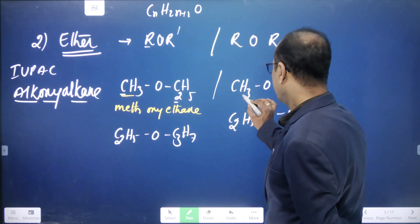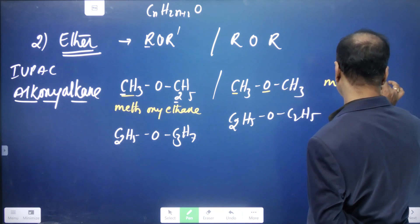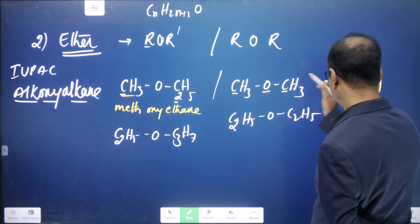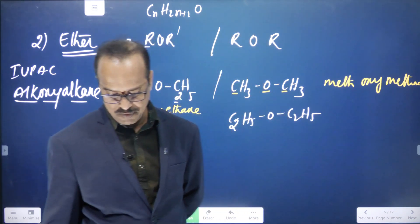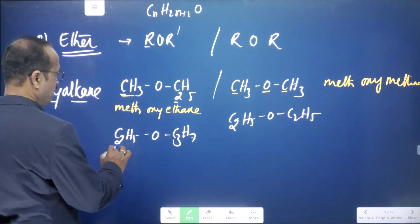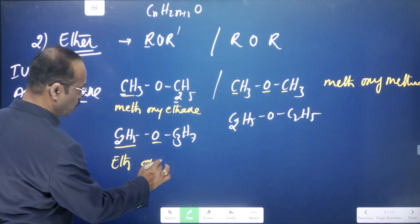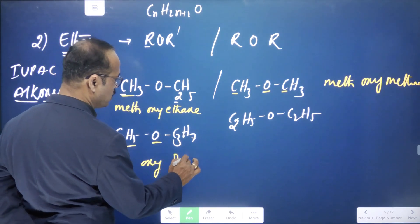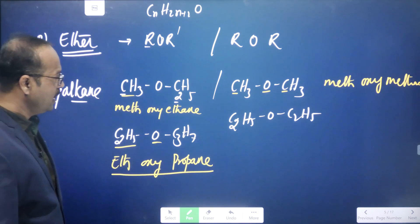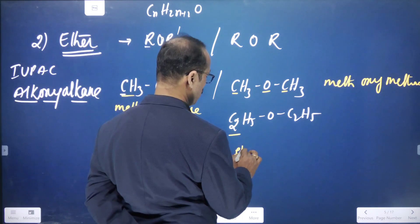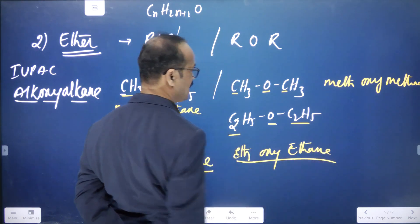For C2H5-O-C3H7 — two carbons on the left is ethane (ethoxy), three carbons on the right is propane: IUPAC name is ethoxypropane. For C2H5-O-C2H5 — two carbons on each side, ethoxy + ethane: the IUPAC name is ethoxyethane. Like this, you can write the names of ethers.